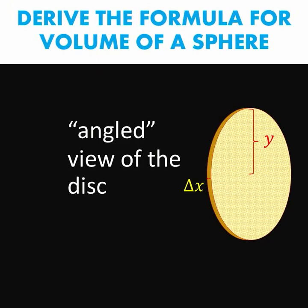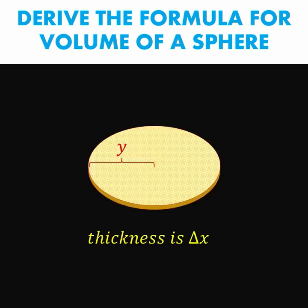So up here, the radius is y and the thickness is delta x. We can also position our disk sideways. Still, the radius is denoted as y and the thickness of our disk is delta x. So what is the volume of this disk?